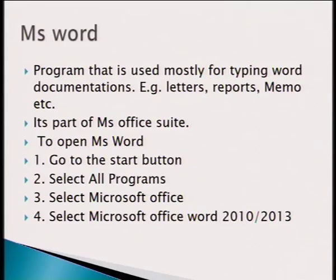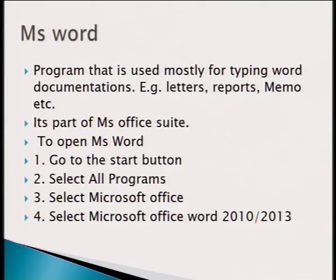How do you open Microsoft Word? You go to the Start button, at the bottom left of your computer, and you select All Programs. Since it's part of Microsoft Office Suite, you select Microsoft Office, and then you select Microsoft Office 2010, Microsoft Office Word. They come in different versions — 2003, 2007, 2010, 2013 — so you select the one that is installed in your computer.